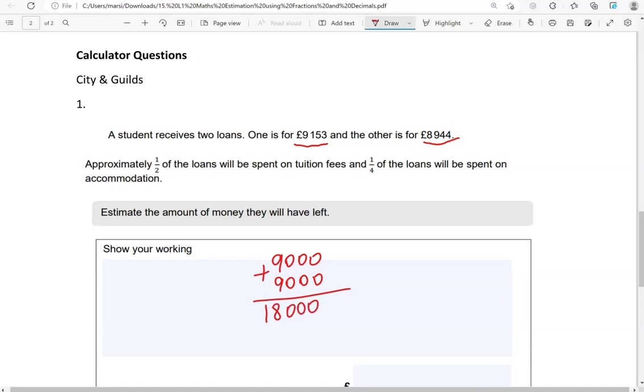Half of it is spent on tuition fees. So half of £18,000 is £9,000. And a quarter of the loans will be spent on accommodation. So a quarter is £4,500, which we can work out with a calculator as well. £9,000 divided by 2 gives us £4,500.